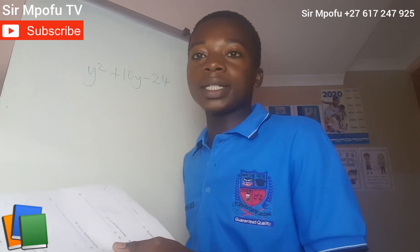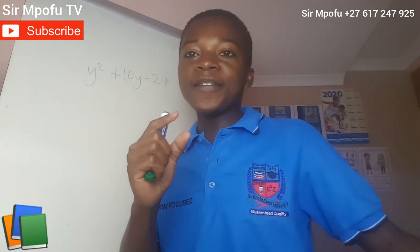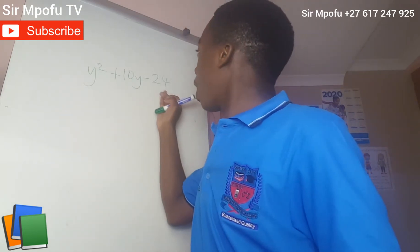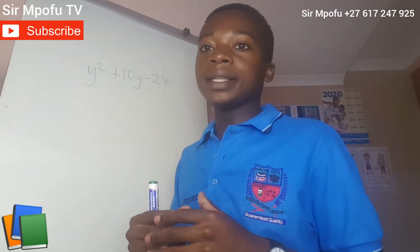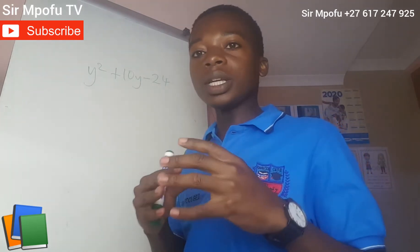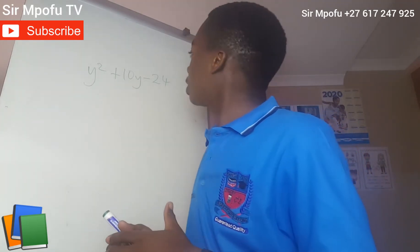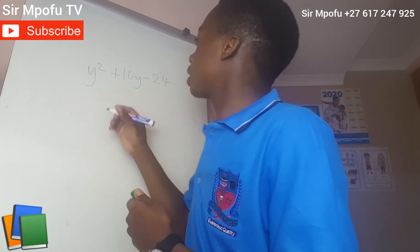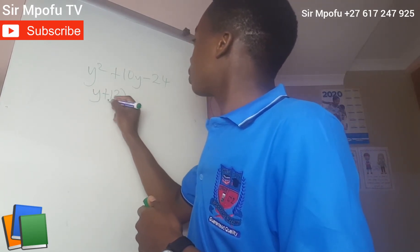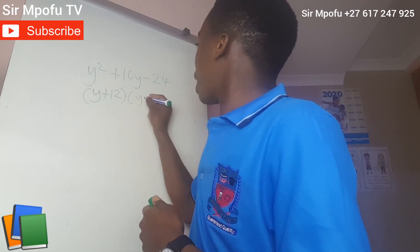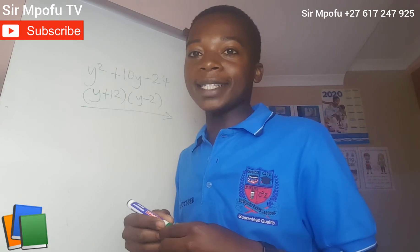Remember, if you have got a question like this, what you have to do is you must find factors of our constant that will give us the middle term. Now what are the factors of 24 that will give us a positive 10? It's 12 and 2. So it's going to be (Y + 12)(Y − 2). That will be our final answer.